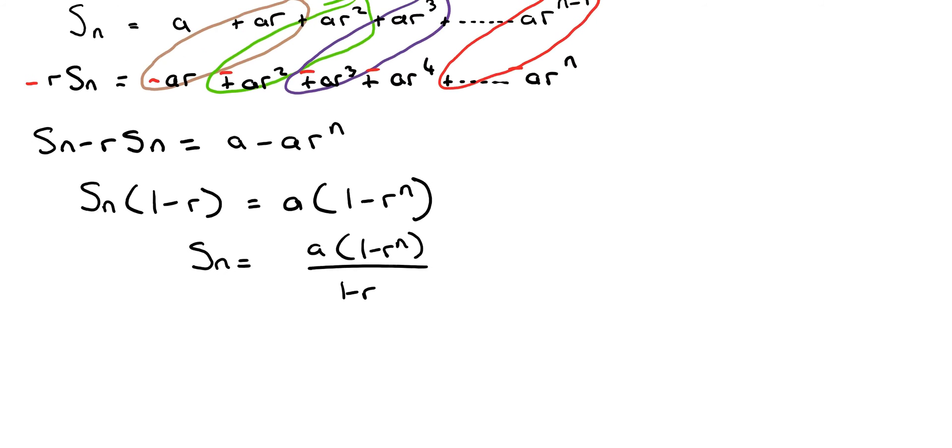So we're taking the limit as n goes to infinity of Sn is equal to a one minus r to the n, over one minus r.